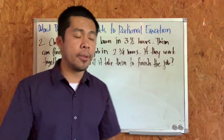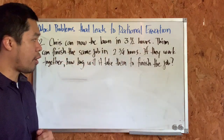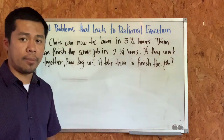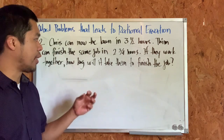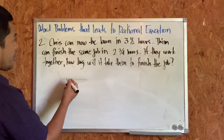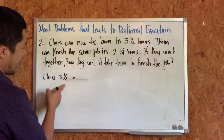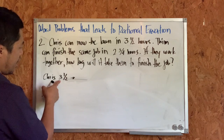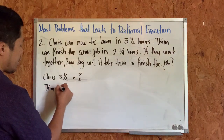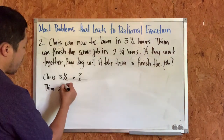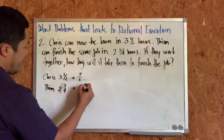Let's have the second example. Chris can mow a lawn in three and a half hours. Tim can finish the same job in two and three-quarters hours. If they work together, how long will it take them? Since we're dealing with mixed numbers, the first thing we need to do is convert them to improper fractions. For Chris, 3 and 1/2 becomes 7/2. For Tim, 2 and 3/4 becomes 11/4.